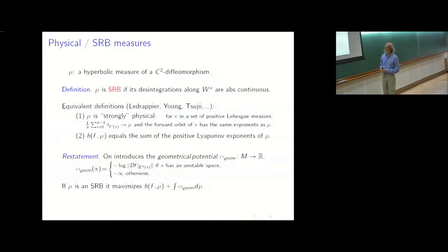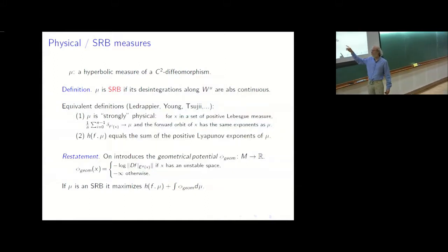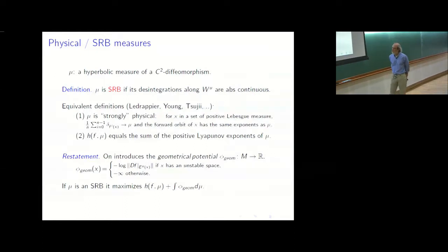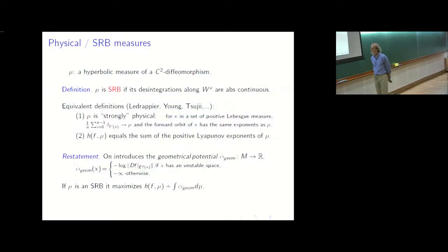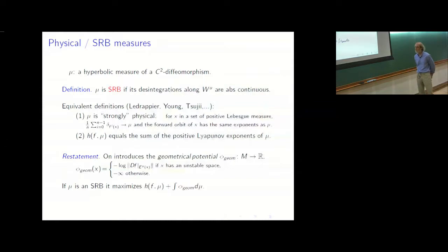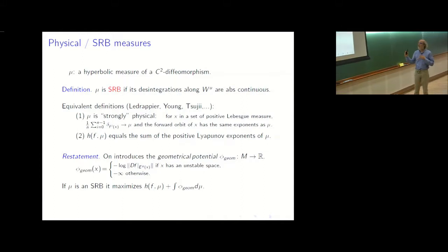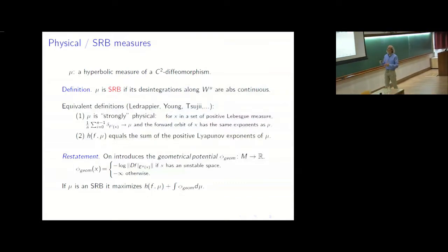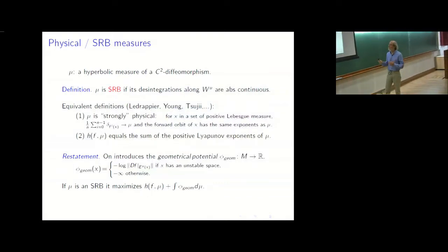You can restate condition 2 by saying a measure is SRB if and only if the entropy plus the integral of that potential phi vanishes. In fact there is an inequality due to Ruelle: for any measure this quantity is non-positive. So an SRB measure always maximizes this quantity, and if an SRB measure exists the maximum is zero. In this sense SRB measures are exactly the measures that maximize entropy plus the integral of that quantity.